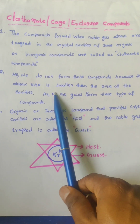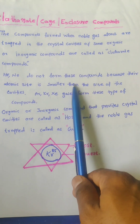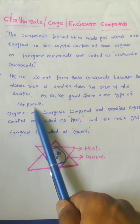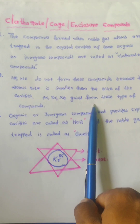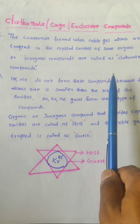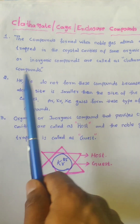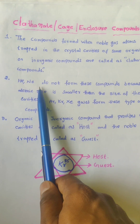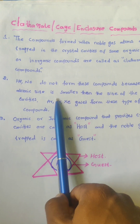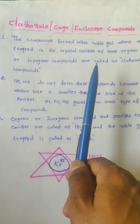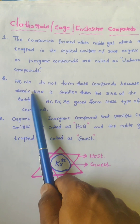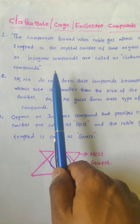The second point: helium and neon do not form these clathrate compounds. Only argon, krypton, and xenon form such types of clathrate compounds. Why? Because helium and neon have very small atomic size, so they escape from the cavities present in these crystals. That is why they do not form the clathrate compounds.